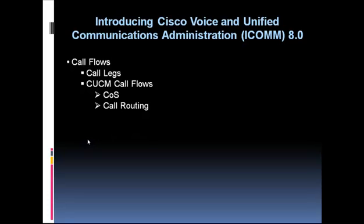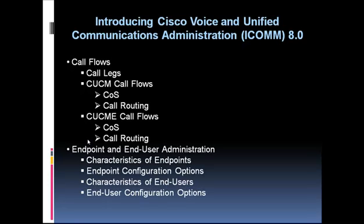The course gets more specific about call flows in CUCM versus CUCME environments, and discusses class of service — meaning call restrictions. For example, should a lobby phone be allowed to call internationally? On Communications Manager, call restrictions are implemented using partitions and calling search spaces, while on Communications Manager Express, COR (Class of Restriction) is used. There are different ways of setting up call routing: route patterns in Communications Manager and dial peers in Communications Manager Express.